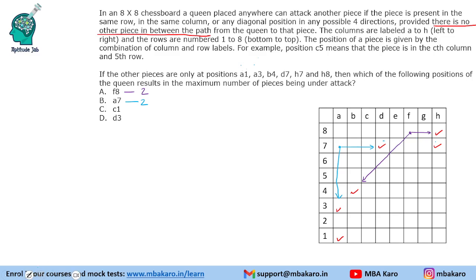For the queen at C1: one piece is under attack in the column, and one piece is under attack along a diagonal — two pieces under attack. For the queen at D3: one piece under attack in the row direction, another in the column, and one more along the diagonal — three pieces under attack. So the position with the maximum pieces under attack is D3.